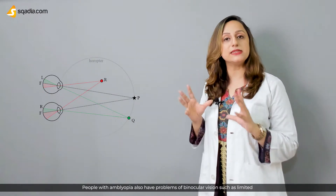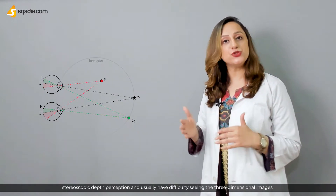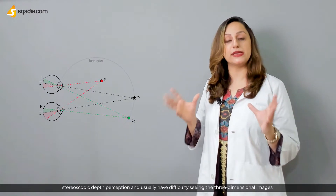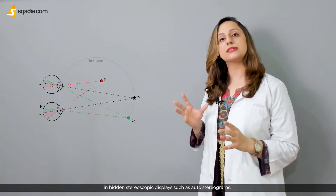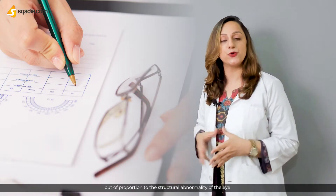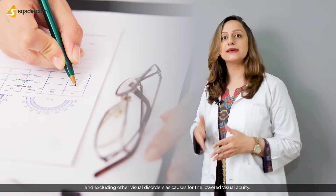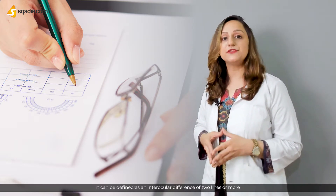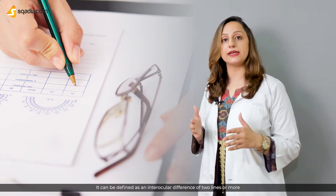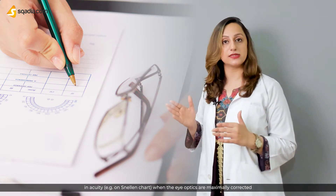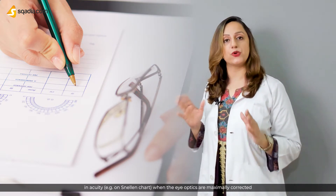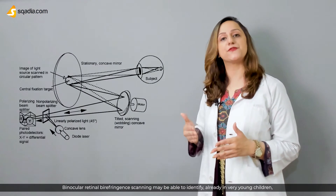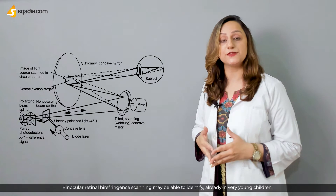People with amblyopia also have problems with binocular vision such as limited stereoscopic depth perception and usually have difficulty seeing three-dimensional images in hidden stereoscopic displays such as auto stereograms. Amblyopia is diagnosed by identifying low visual acuity in one or both eyes out of proportion to the structural abnormality of the eye, and excluding other visual disorders as causes. It can be defined as an interocular difference of two lines or more in acuity, for example on Snellen's chart, when the eye optics are maximally corrected.